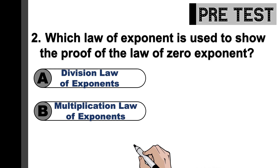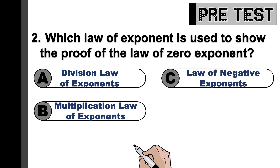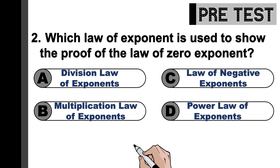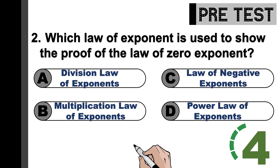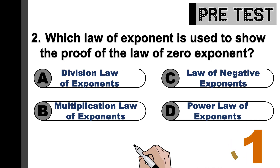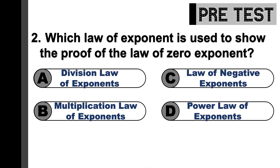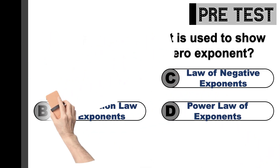The multiplication law of exponents. C, the law of negative exponents. Or letter D, the power law of exponents. 5 seconds. Time is up. Please take note of your answers as we are going to verify them later.